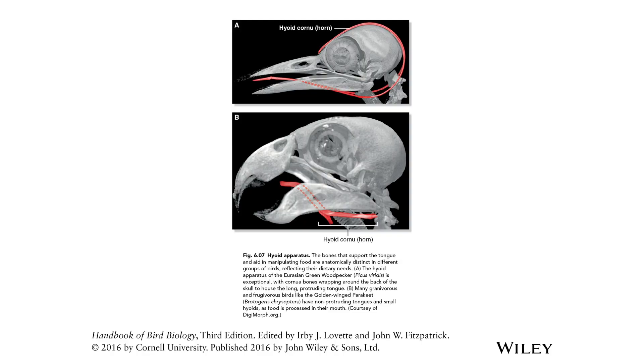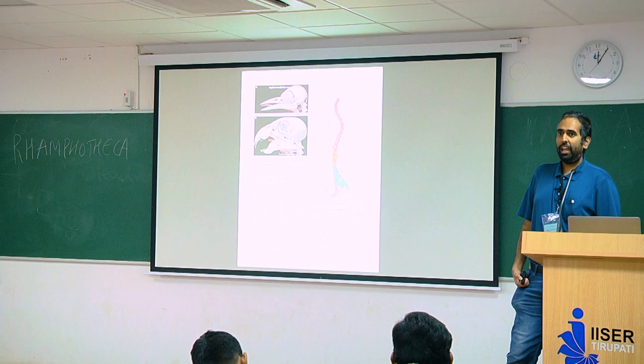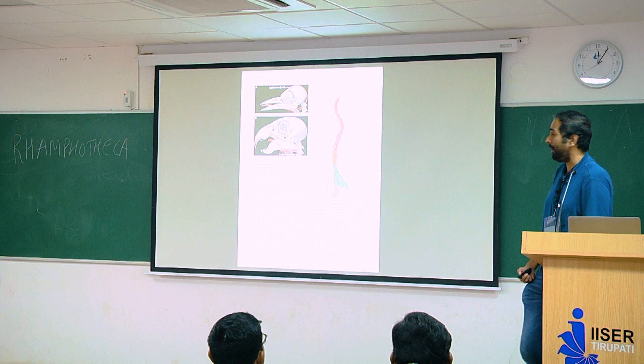A woodpecker has this elongated tongue that flips in and out and wraps around its skull. Parrots have short, thick tongues that help with manipulating seeds. If anyone has not watched a parrot eat, I thoroughly recommend it — it's a lot of fun.